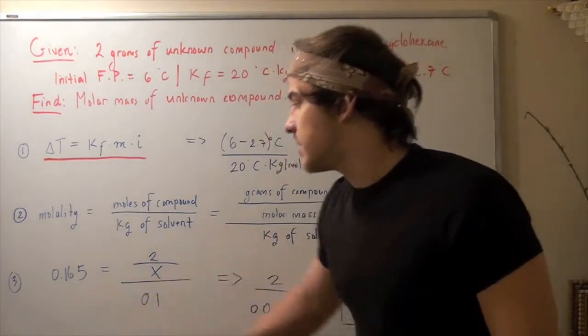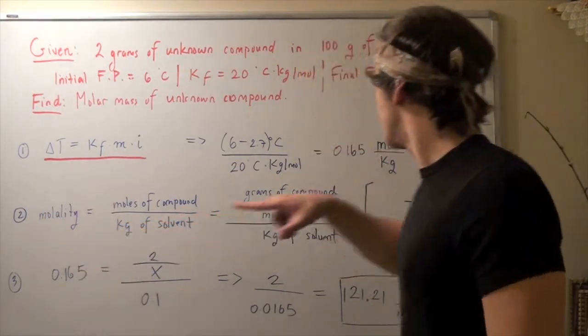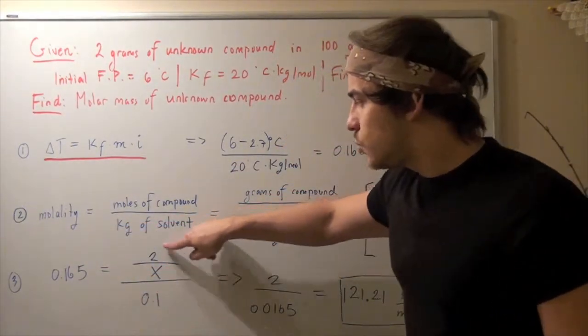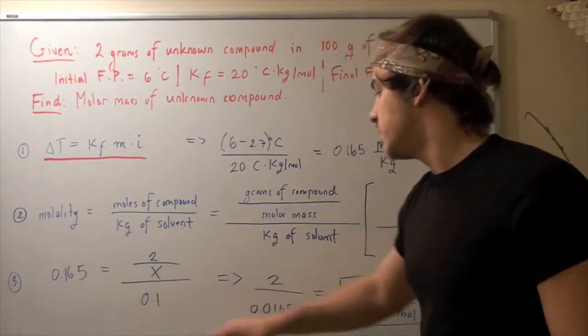Now, our third step, and our last step, we basically plug in our values. So, for molality, which we got from the first step, is 0.165 equals 2 divided by x, our unknown, the molar mass, entire thing divided by 0.1.